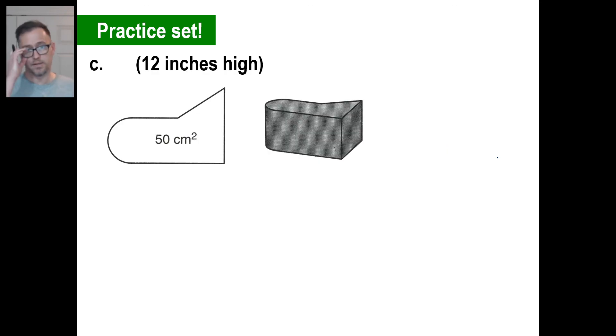So, all right, go ahead and try C. Well, that was easy. They give you the area of that base is 50. So you just go 50 times 12 is 600. So it's going to be 600 cubic centimeters. And that is the whole thing.